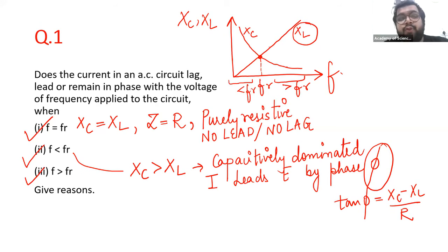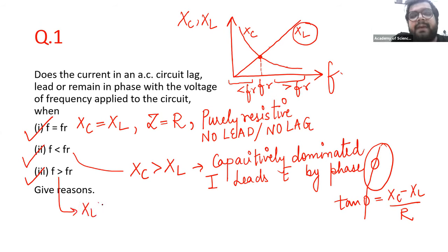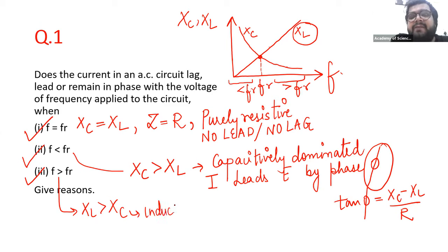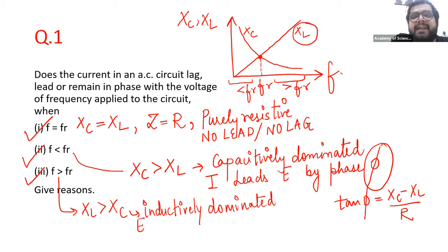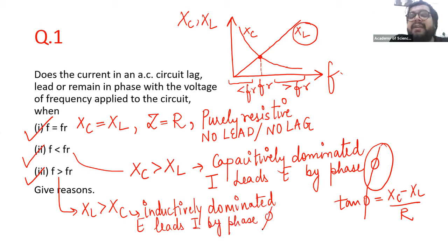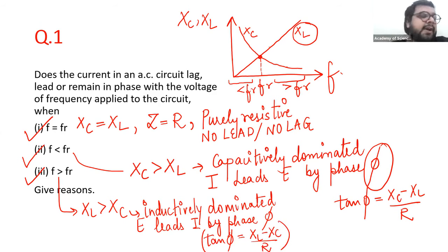For part three — when the frequency is greater than the resonant frequency — XL is bigger than XC, and the circuit is inductively dominated. In inductively dominated circuits, it is the EMF which leads. So in this circuit, EMF leads current by phase angle φ. The formula to calculate this phase φ is: tan φ = (XL − XC) / R, since XL is now bigger.